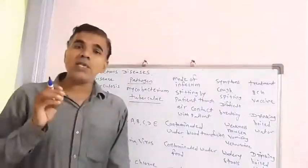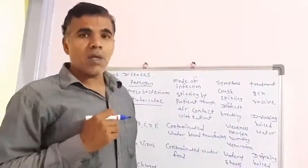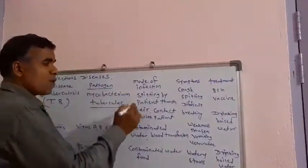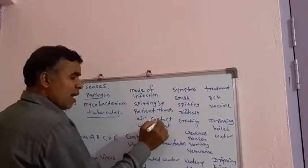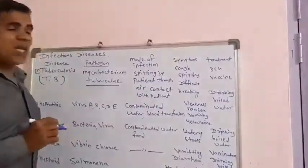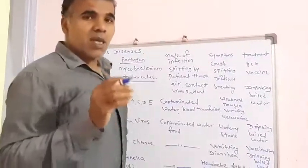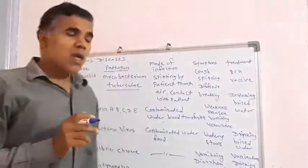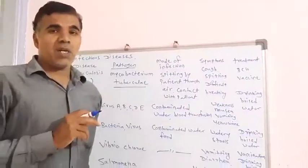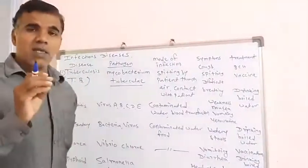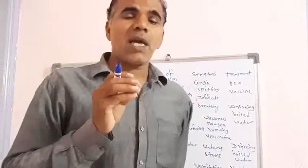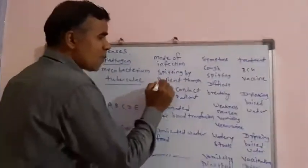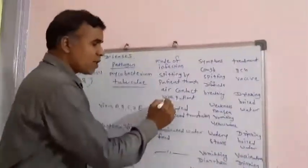Mode of infection — how does this disease happen in our human body? The mode of infection for TB is: number one, spitting by the patient through air, and number two, contact with the patient.